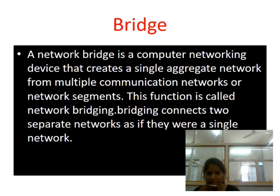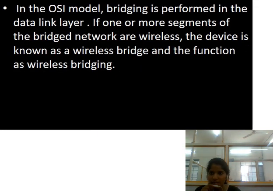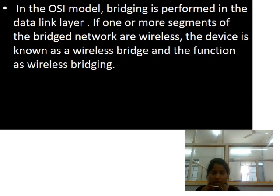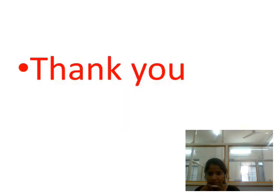In networking, bridging connects separate networks so that they function as a single network. In the OSI model, bridging is performed at the data link layer. If one or more segments of the bridged network are wireless, the device is referred to as a wireless bridge.